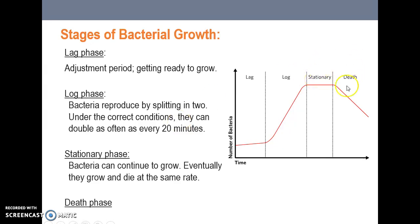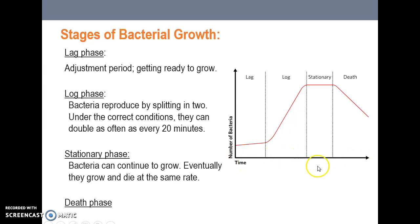Then you go into the stationary phase, where bacteria can continue to grow but eventually start dying as the population becomes overly dense. After that comes the death phase, where bacteria die off. Time on the chart can also be replaced with temperature to produce a similar growth curve.